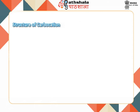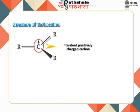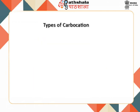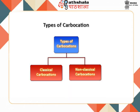Carbocations are species with a trivalent positively charged carbon. They are also called carbenium ions. They are formed via heterolytic cleavage in an organic molecule, where the carbon donates the shared pair of electrons to the leaving group, resulting in the development of a positive charge on the carbon atom. Carbocations are generally unstable because they do not have 8 electrons to satisfy the octet rule.